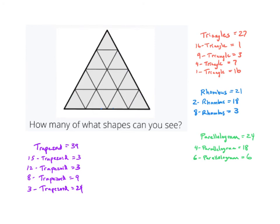I also see hexagons, which are six-sided figures. I see one wide hexagon right here, and then turning the triangle on its side I see a second one, and turning it again a third one. I'm going to call that a wide nine-hexagon because it has nine triangles in it — there are three of those.